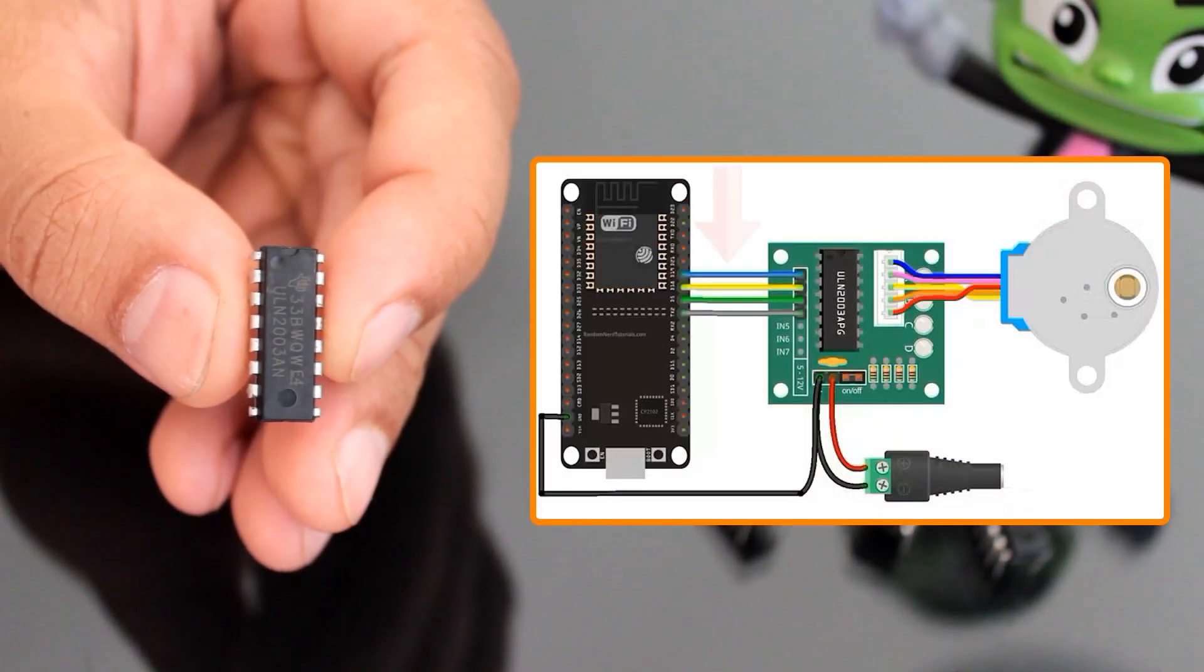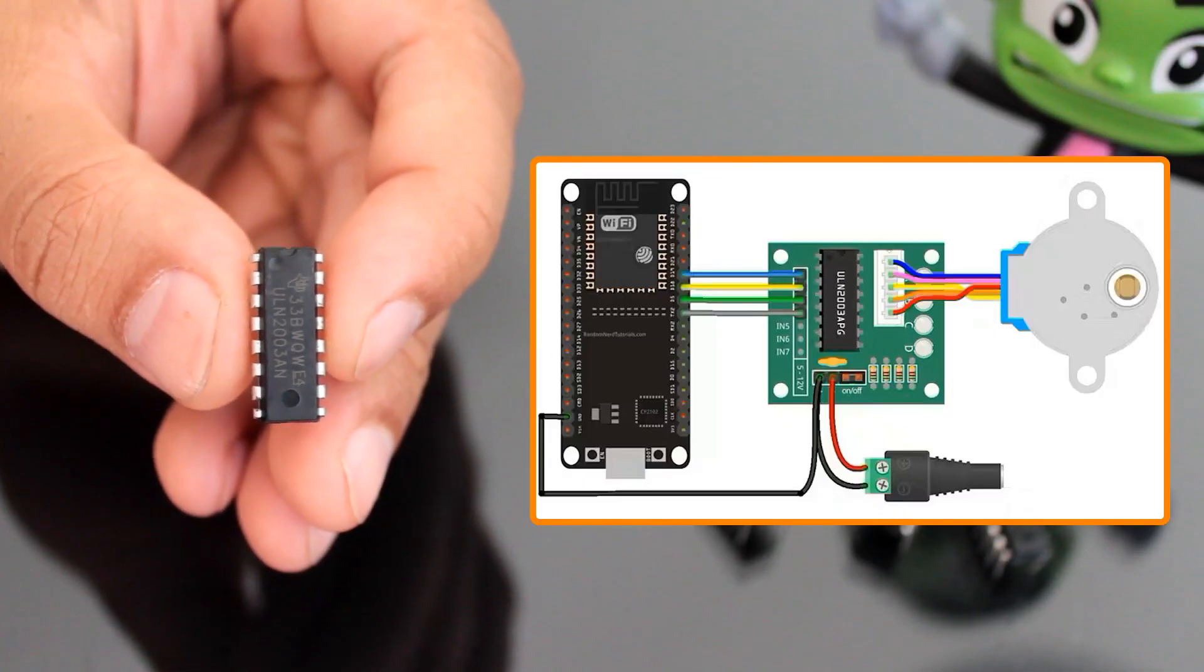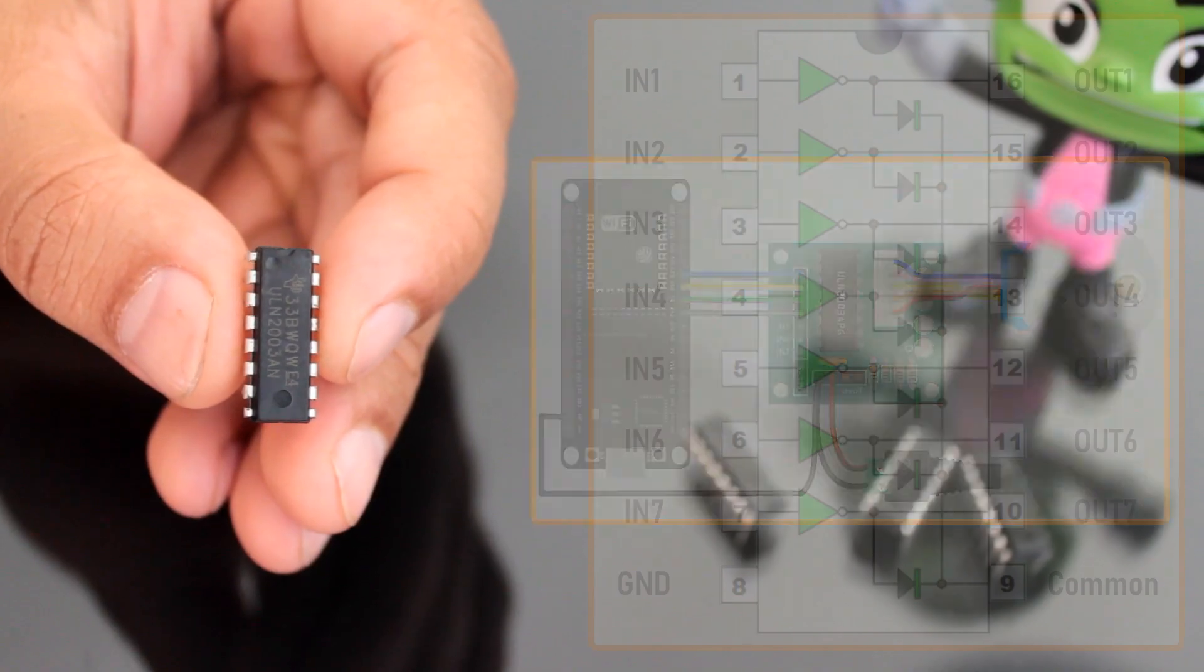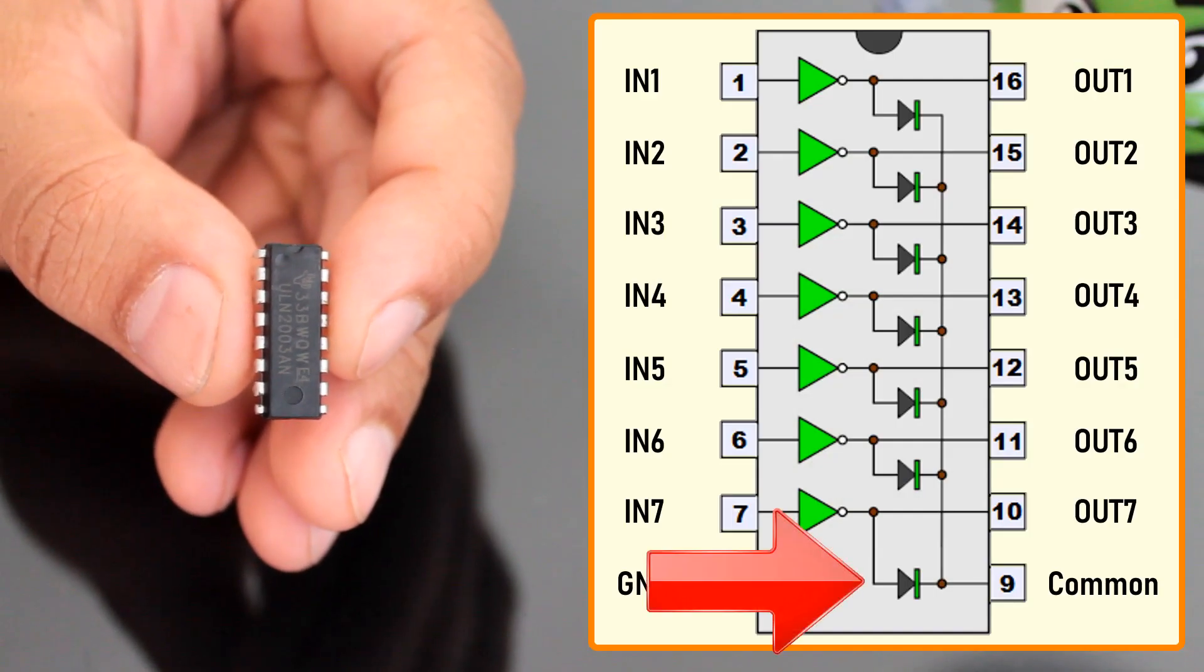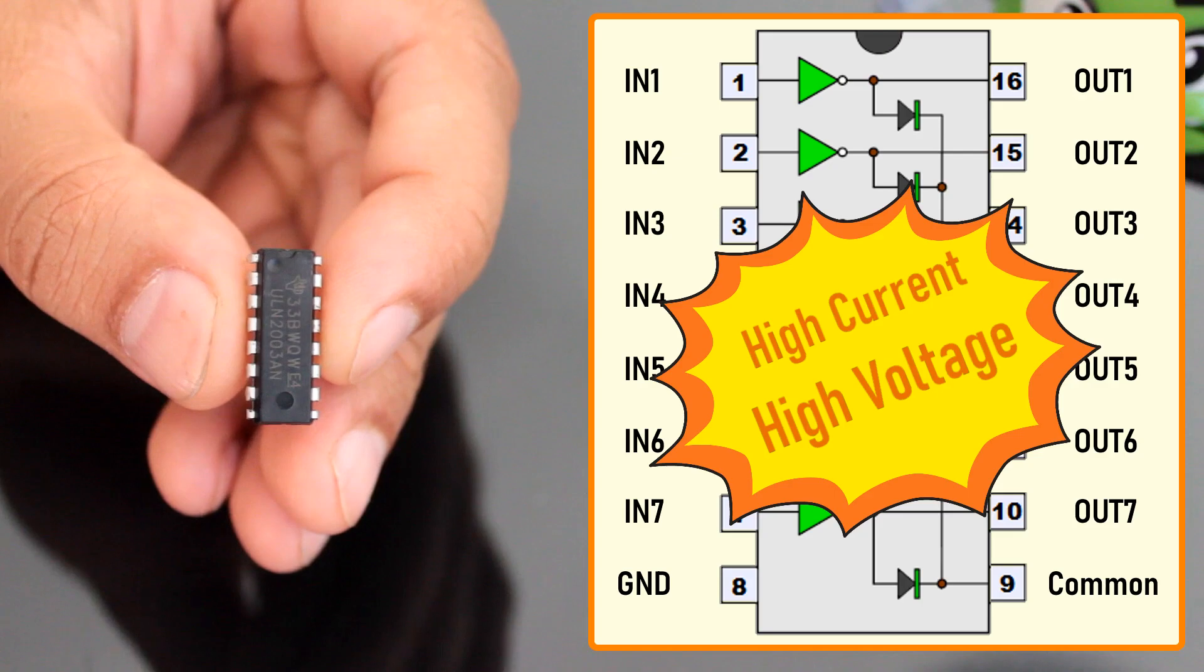You can connect the IC directly to a digital logic like Arduino or Raspberry Pi, TTL or 5V CMOS device without an external dropping resistor. This IC features common cathode flyback diodes for switching inductive loads. The ULN 2003 is known for its high current and high voltage capacity.